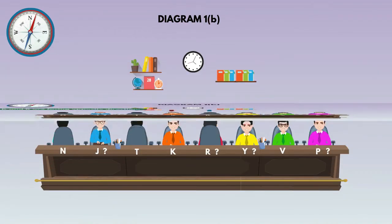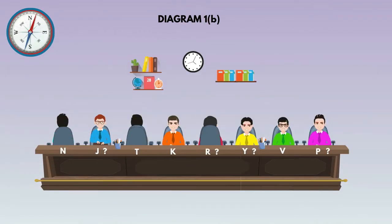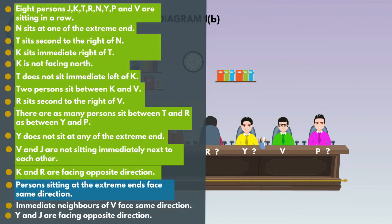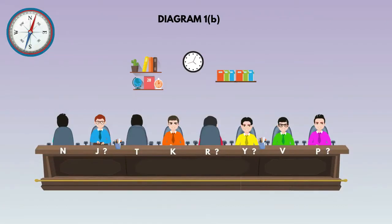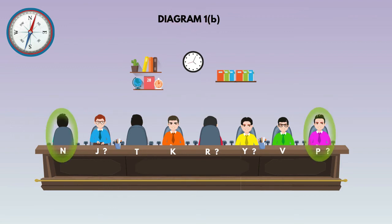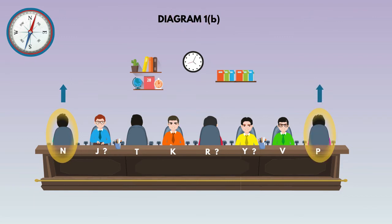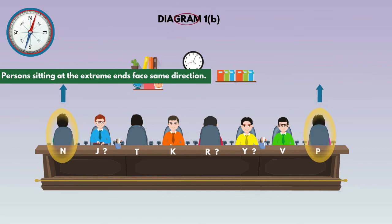Go to the next statement: Persons sitting at the extreme ends face same direction. In diagram 1B, the persons at the extreme ends are N and P. N faces north direction, so P must also face north direction because persons sitting at the extreme ends face same direction.